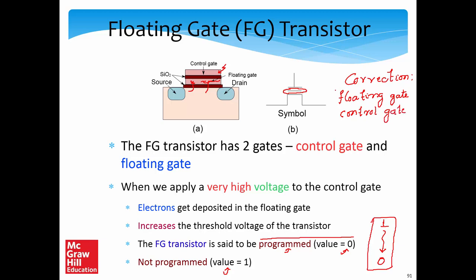As a correction: both the floating gate and the control gate materials are polysilicon as of 2017's technology, even though this may change in the future. The substrate, drain, and source use doped silicon, which are the traditional materials.